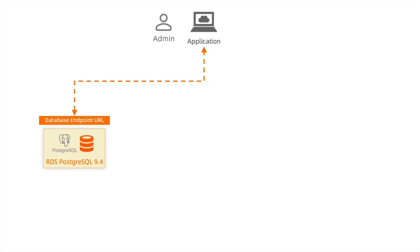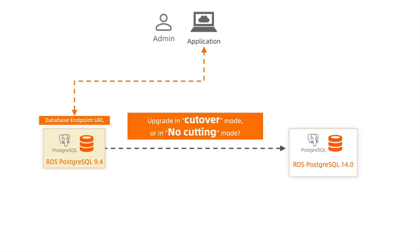There are two business cutting-over options. One is upgrade in cut-over mode, and another one is no cutting mode. With the cut-over mode, it is more automatic, with the database endpoint URL switched over at the backend automatically, so that you don't need to change the database endpoint URL in the application.